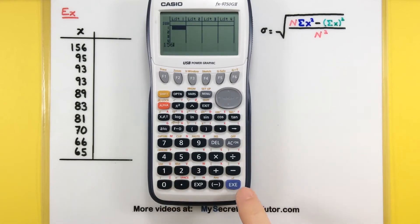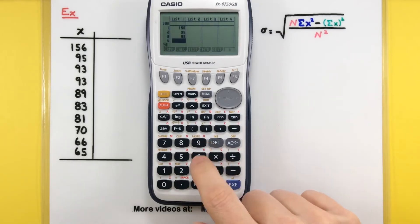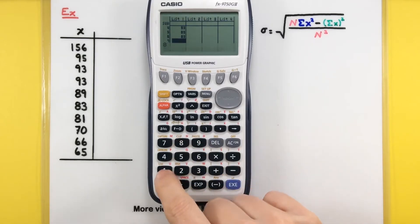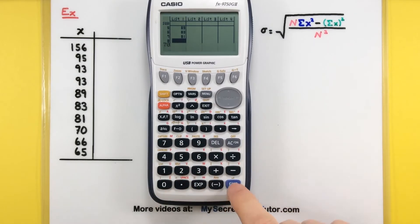Type in each number and press execute to move to the next line. I have ten numbers here, but it won't take long to get them all typed in. There we go—all ten numbers entered.